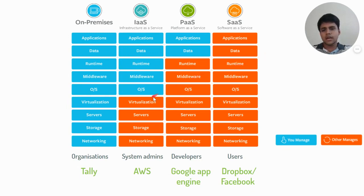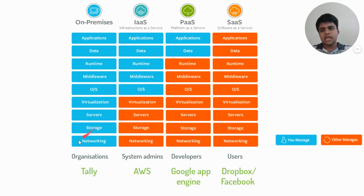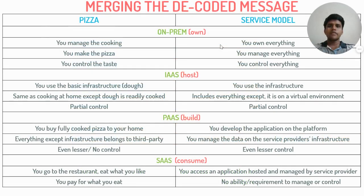As we move across different service models, the level of control available to users keeps diminishing. Now that we have completed the comparison, I have drawn up a table summarizing the differences with our pizza example, which should be helpful as a ready reckoner.